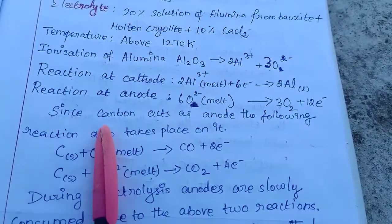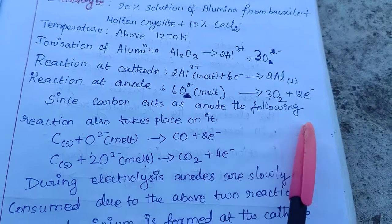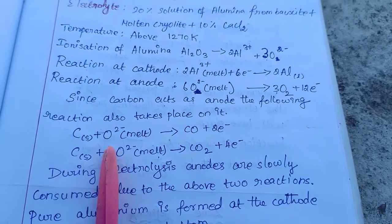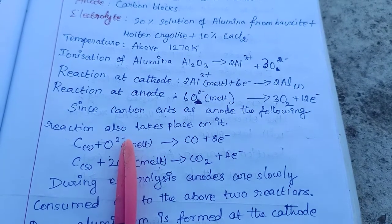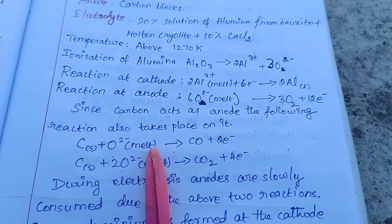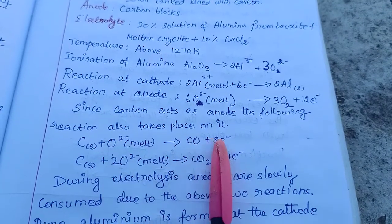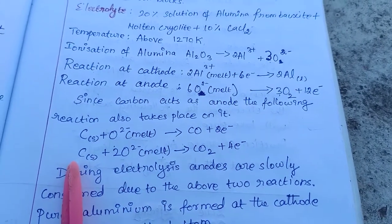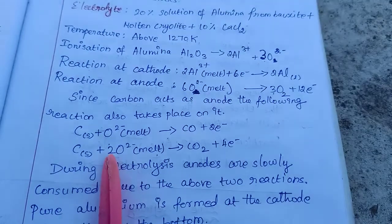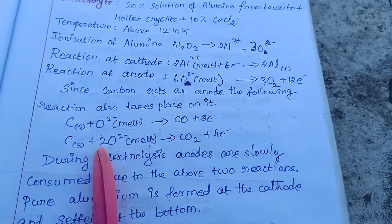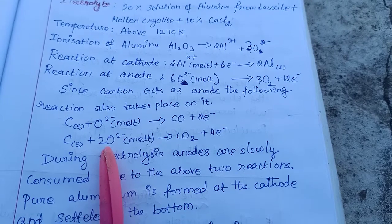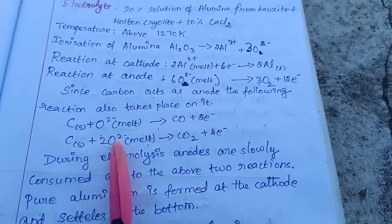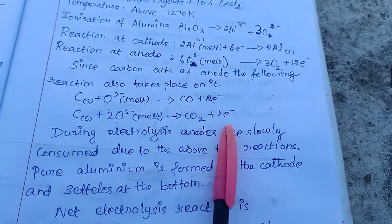Since carbon acts as the anode, the following reaction takes place: carbon reacts with oxygen O²⁻ under molten conditions to form carbon monoxide. O²⁻ releases 2 electrons. Carbon reacts with 2O²⁻, releasing 4 electrons to form CO₂ carbon dioxide.